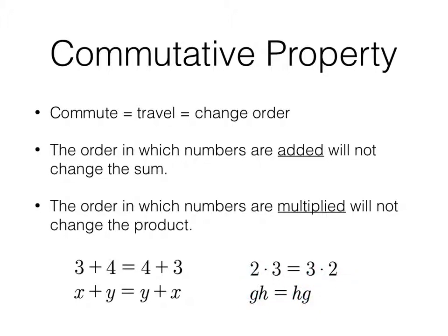Remember what GH means. GH does not mean a two-digit number where the first digit is the value of G and the second digit is the value of H. This means G times H and this means H times G. But we don't need the dots. We just show it with the multiplication stuff together. So commutative property, change order. C for change, O for order.